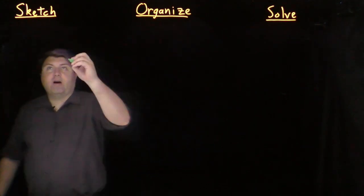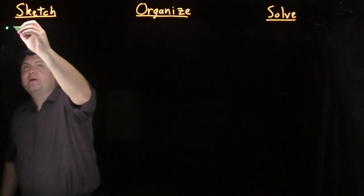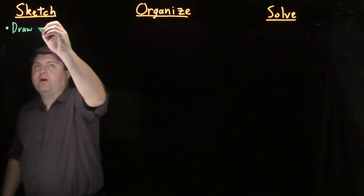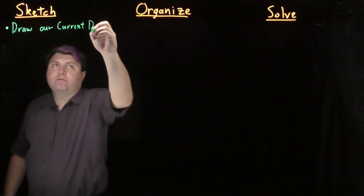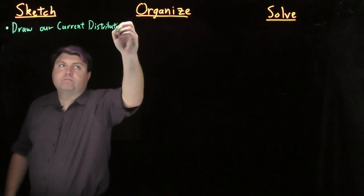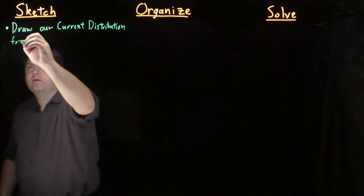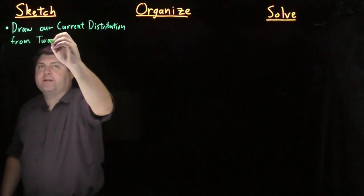We always start our sketch step by drawing something, and we want to draw our current distribution from two perspectives.